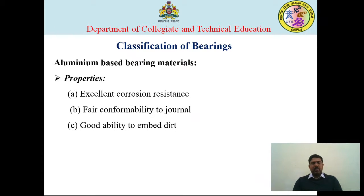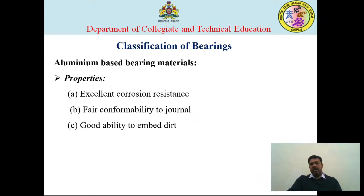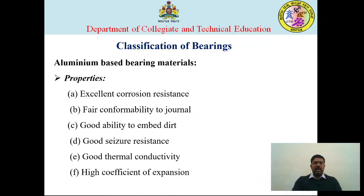The typical properties of aluminium-based bearing material include excellent corrosion resistance, good conformability to the journal — the journal being a portion of the bearing — and good ability to embed dirt. It also has good seizure resistance, good thermal conductivity, and high thermal expansion. These properties allow smooth running of the machine.